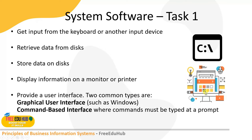There are two types of user interfaces: a command prompt through which we can pass certain commands to the computer, and a graphical user interface. Common types are the graphical user interface — through which we can easily interact with programs like Word, Excel, or PowerPoint — and the command line interface, where commands must be typed at a prompt, used for example to get information about IP addresses, network connectivity, partitions, and other system details.